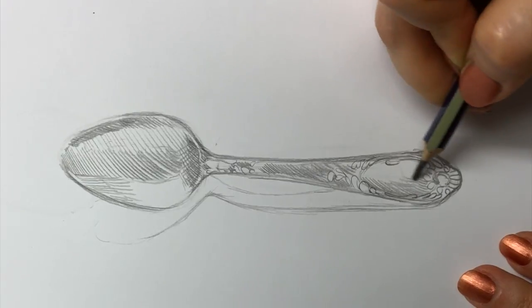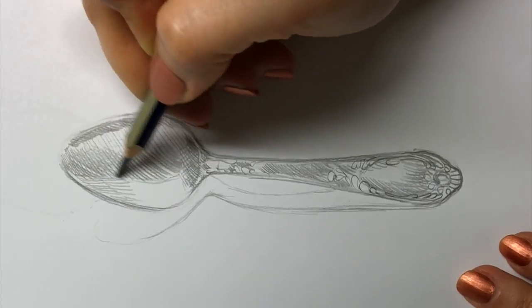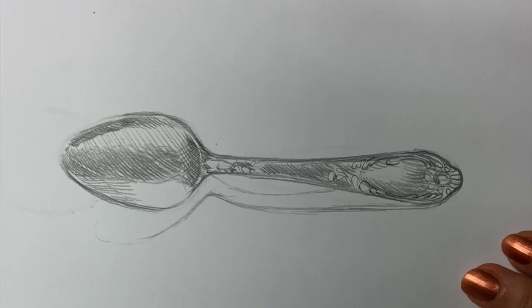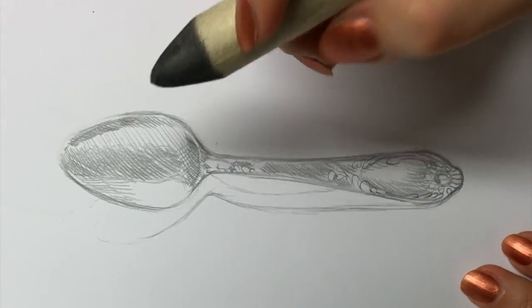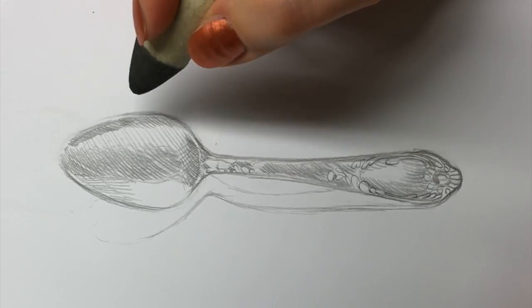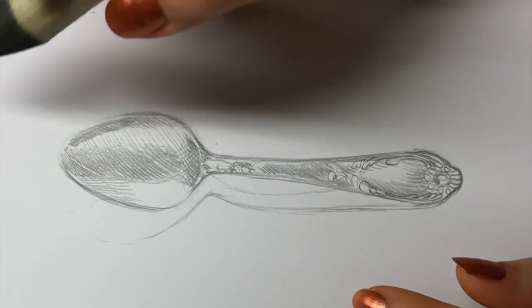I'm going to leave the pattern for now. And not worry too much about it. We can get back to it later. Okay. So now I'm going to use a smudge stick because I want to create a really soft sort of a look to the spoon. But if you're happy with just doing cross-hatching, feel free to do that as well.